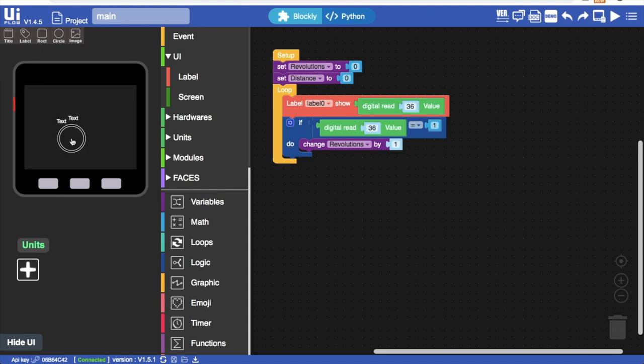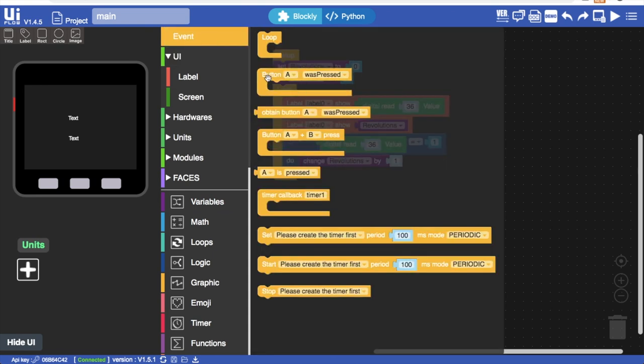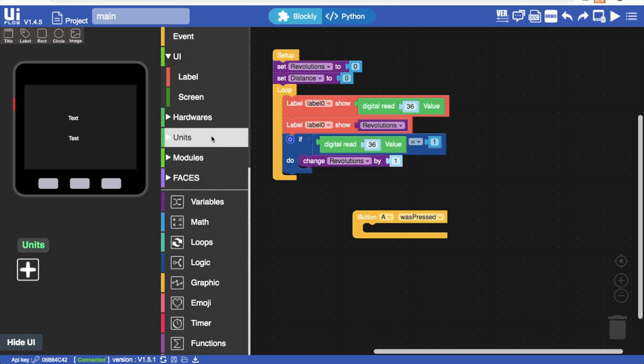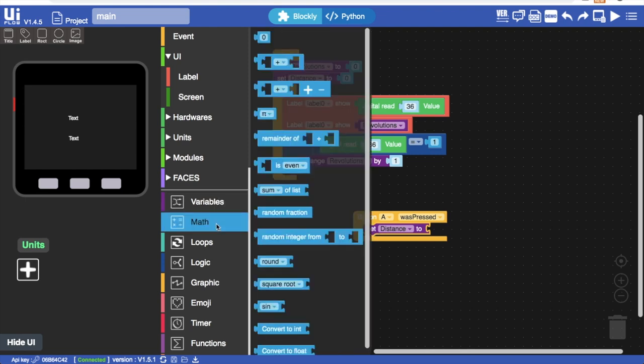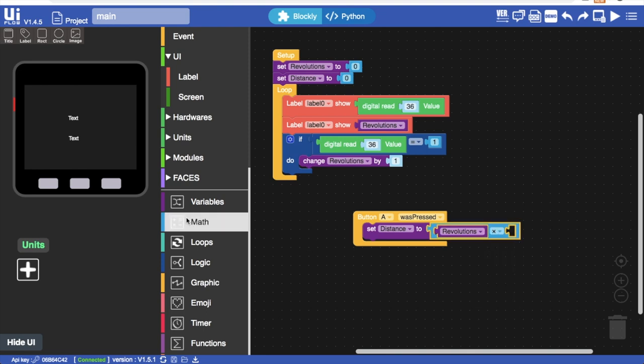Now we can drag an extra text label and add an extra label block to display the revolutions. Now we can use a button A pressed event so we can press the A button to check how much distance we've traveled. To calculate the distance we've traveled we'll use the distance variable that we created and then multiply it by the diameter of our wheel. Mine was 220 centimeters.